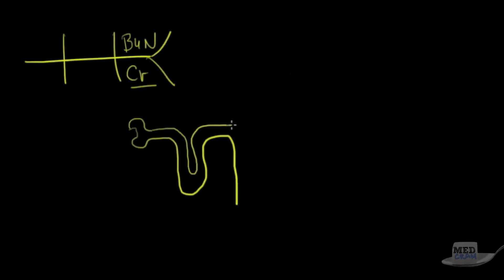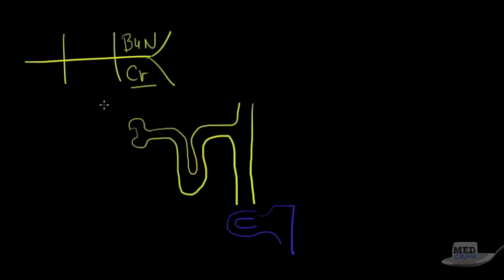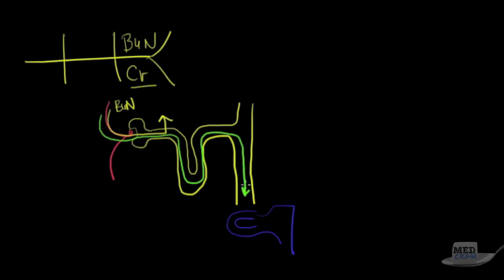Looking at our nephron: that's the loop of Henle, distal convoluted tubule, collecting duct. You've got the afferent arteriole. The BUN — blood urea nitrogen — goes through and gets reabsorbed. The creatinine does not get reabsorbed; instead, a little bit gets secreted.